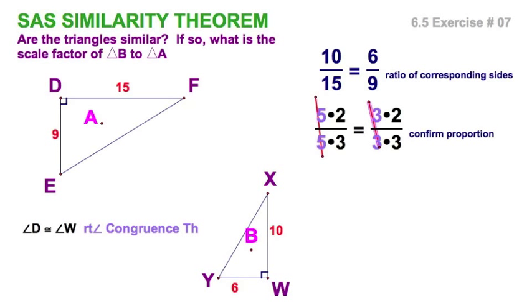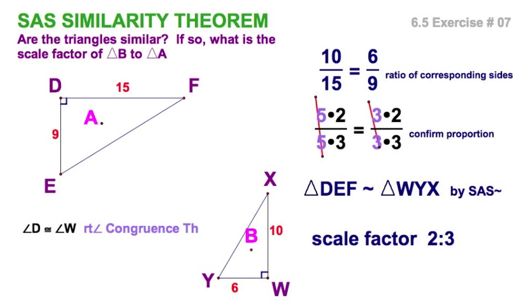And this tells us a couple things. We've confirmed our proportion, and we actually already know our scale factor is 2 to 3. Now let's just make sure we line up our vertices correctly. The D is the right angle, D corresponds with W, E corresponds to Y, and F corresponds with X. And they're similar by side angle side similarity. Scale factor, we already know that - B is to A as 6 is to 9, 10 is to 15, or 2 is to 3.